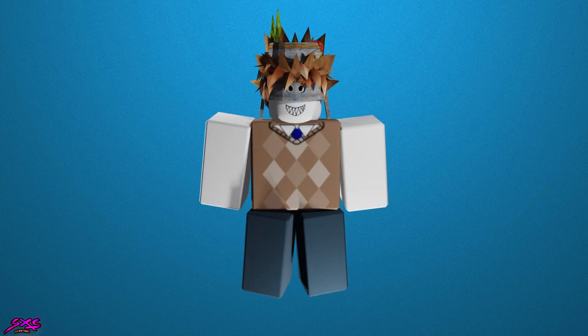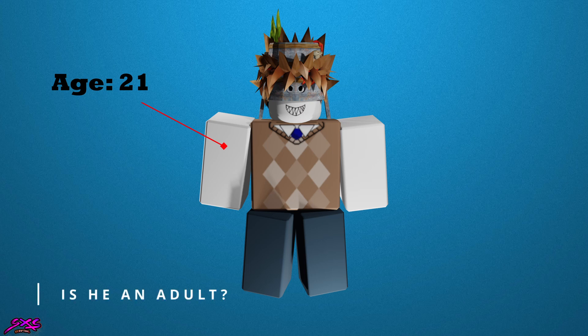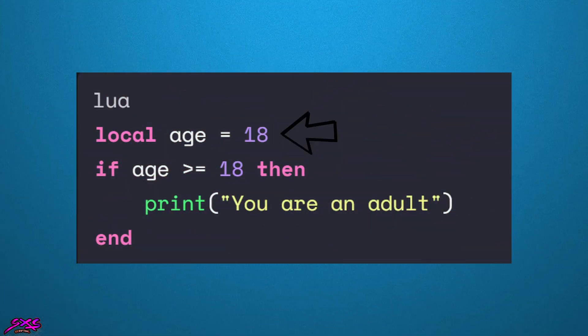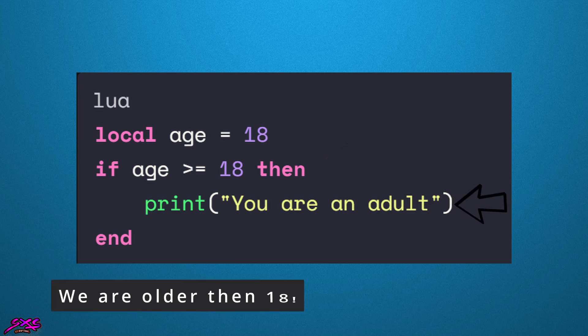Now let's use a visual representation. Let's make a character and set their age to 21 or 22. We want to ask: if our age is greater than or equal to 18, then we want to tell the console that we're an adult. In this example, we declare a variable age and assign it the value of 18, then use an if statement to check if age is greater than or equal to 18. If it is, we print the message 'you're an adult' to the console.